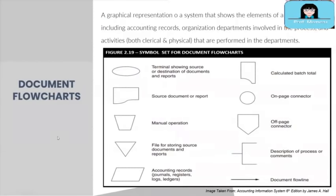Next are document flowcharts. A document flowchart is a graphical representation of a system that shows the elements of a manual system. It shows accounting records, the organizational departments involved in the process, and the activities — either clerical or physical — being performed in those departments.